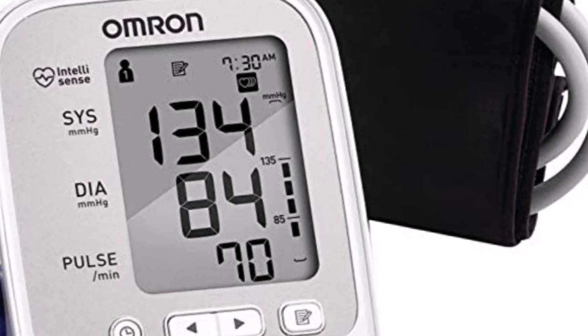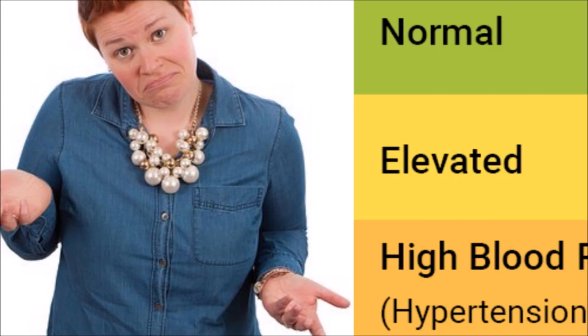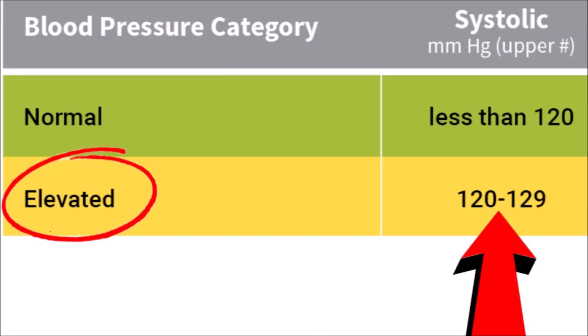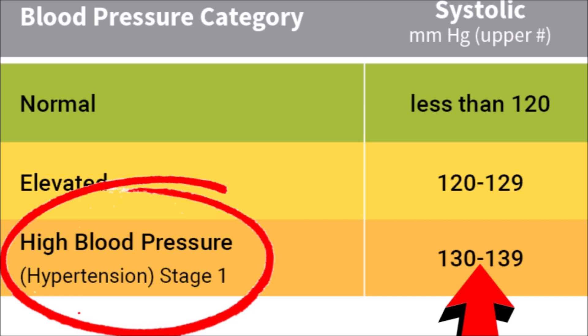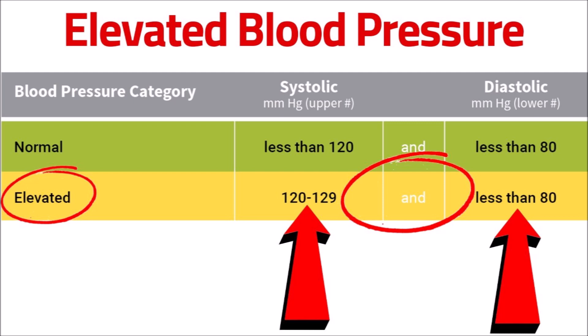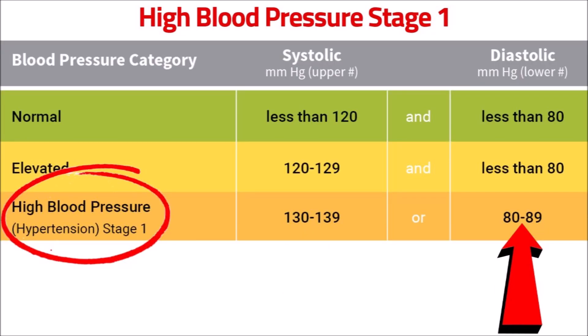So what makes each number considered elevated or high? If systolic is 120 to 129, it's considered elevated. And if it's 130 or more, it's considered high blood pressure. There is no elevated category with diastolic pressure alone, but if it's 80 or more, it's considered high blood pressure.